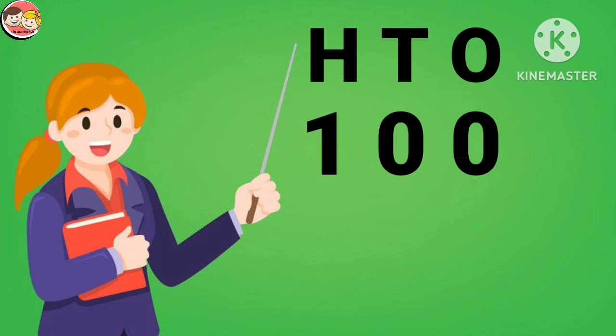Everyone say loudly: 1, 0, 0 — 100. Can you see any changes over here? Yes, look here. H is written over here. H stands for hundreds. So there are 3 digits in the hundreds place.